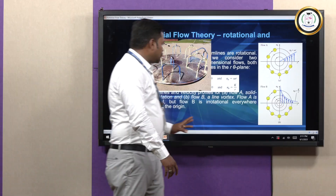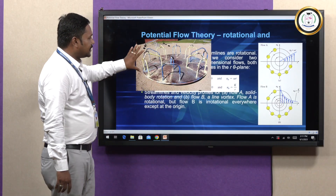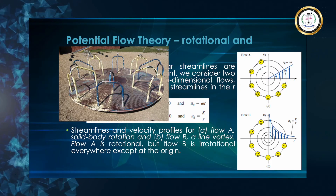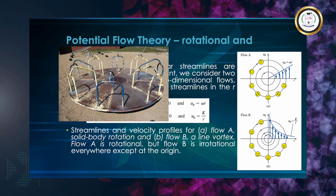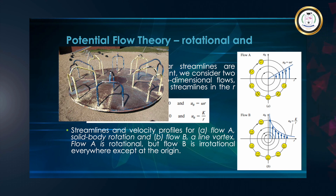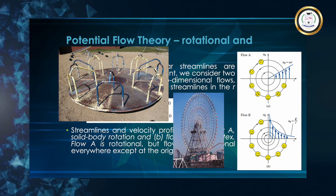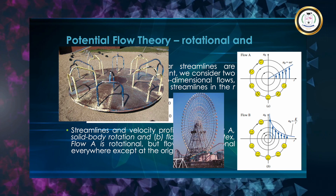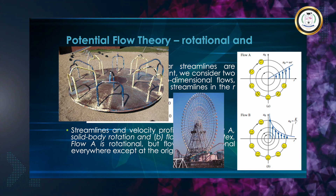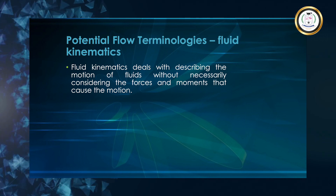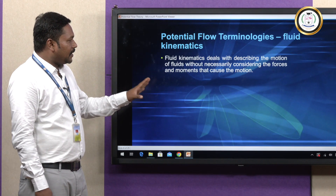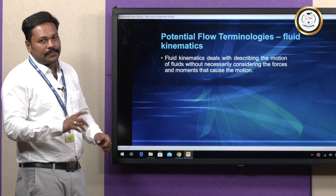Based on this, the example shows a fulcrum centre where all fluid is rotating like a rotational flow. Then we have the joint wheel, which has been rotated like an irrotational flow. Then we have fluid kinematics. Fluid kinematics deals with describing the motion of fluids without necessarily considering the forces and moments that cause the motion.